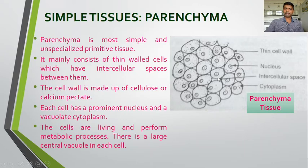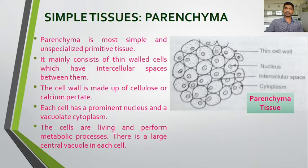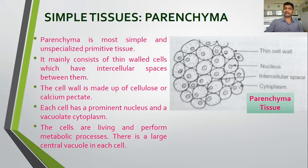The cells are living and perform metabolic processes. There is a large central vacuole in each cell. Here we can see the nucleus of the cell — it has a prominent nucleus. The protoplasm possesses a large central vacuole. So parenchyma is characterized as a most simple and unspecialized primitive tissue, consisting of thin-walled cells with intercellular spaces. Cell wall is made up of cellulose or calcium pectate, each cell has a prominent nucleus and vacuolated cytoplasm.